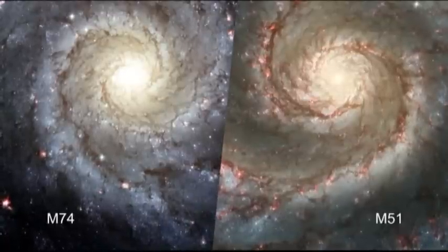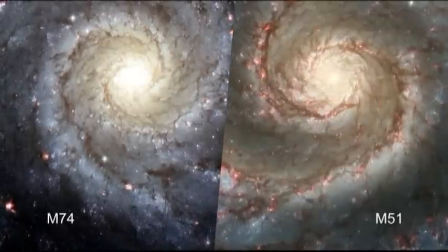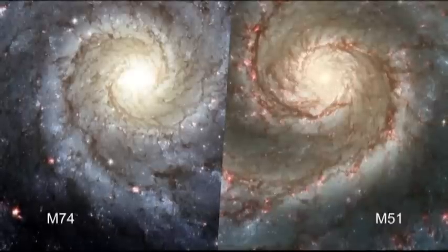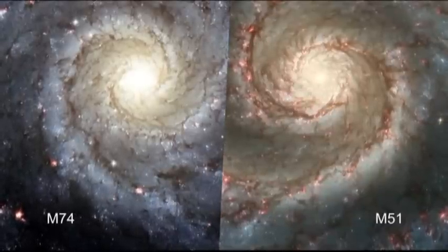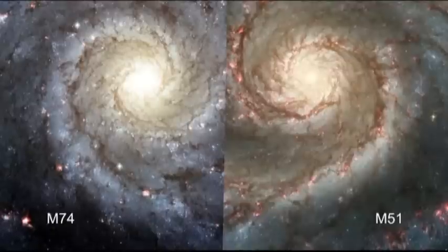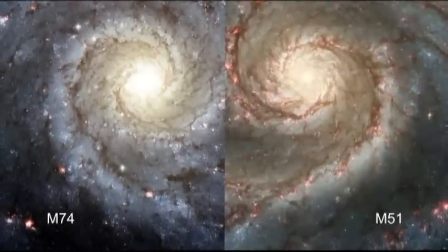Because of the elegant symmetry of its spiral arms, astronomers call this a grand design spiral. Messier 74 bears a strong resemblance to another grand design spiral, Messier 51, the whirlpool galaxy in the constellation of Canis Venatici, the hunting dogs.